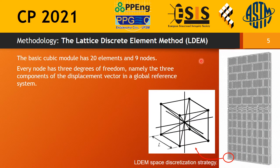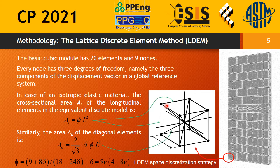We utilize the Lattice Discrete Element Method to model this problem. The Lattice Discrete Element Method consists of the discretization of the solid by means of a regular lattice model. This regular lattice arrangement has 20 elements and 9 nodes, and every node has 3 degrees of freedom. The area of these elements — longitudinal ones or diagonal ones — is calculated to match the elasticity of the material, so the elastic behavior is exactly the same as the solid it represents.